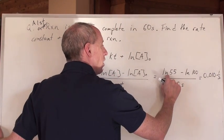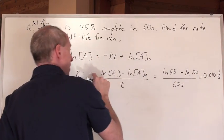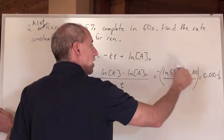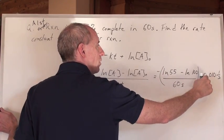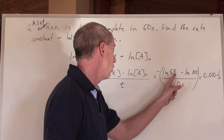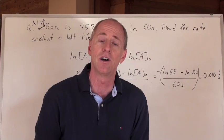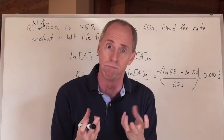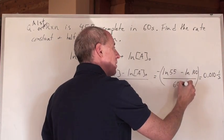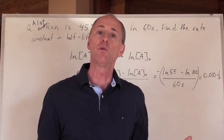When you do natural log of 55 minus natural log of 100, that's a negative number, but that negative in front is going to turn that into a positive. Divided by 60, you get 0.010. The unit is, you can't take the natural log of a unit, so you just have natural log of two numbers divided by seconds, so the unit is one over seconds. That's the rate constant, K.